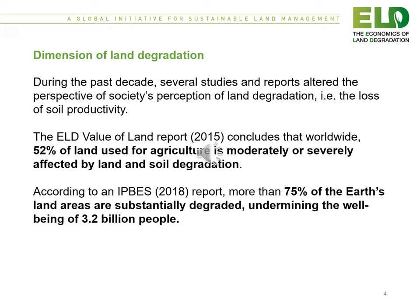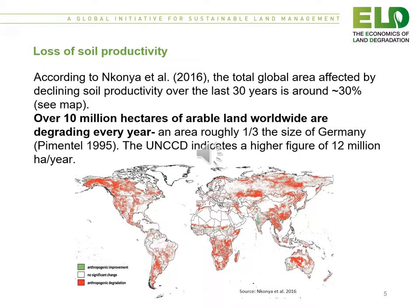Some brief words on the dimension of land degradation. During the past decade, several studies and reports have altered society's perception of land degradation. The ELD Value of Land report of 2015 concludes that worldwide 52 percent of land used for agriculture is moderately or severely affected by land and soil degradation. According to an IPBES 2018 report, more than 75 percent of the earth's land area is substantially degraded, undermining the well-being of 3.2 billion people. According to Nagoya 2016, the total global area affected by declining soil productivity over the last 30 years is around 30 percent.